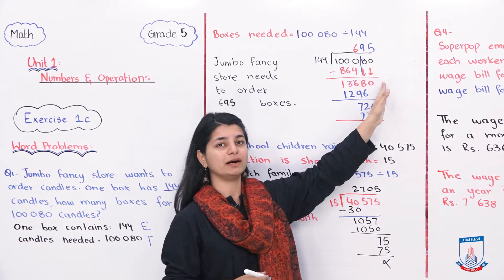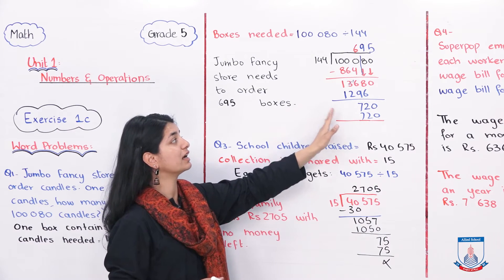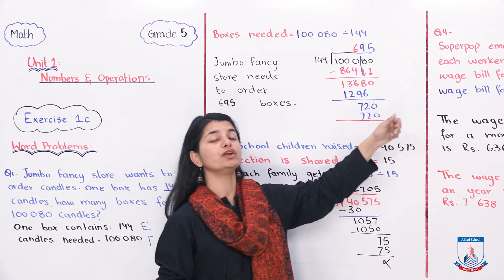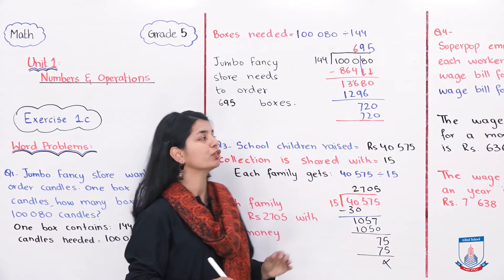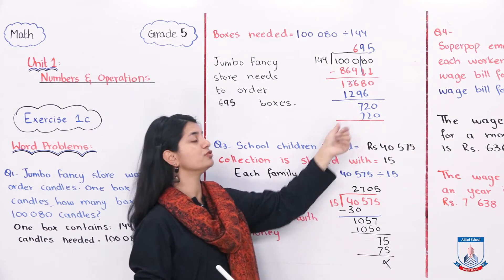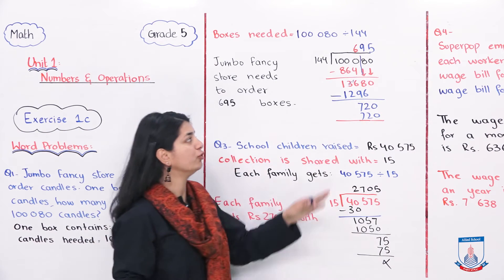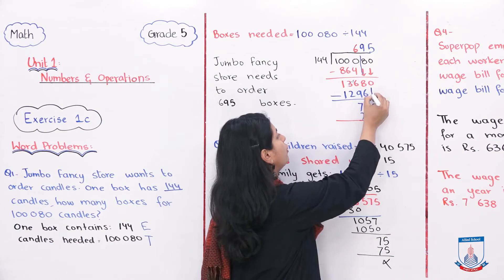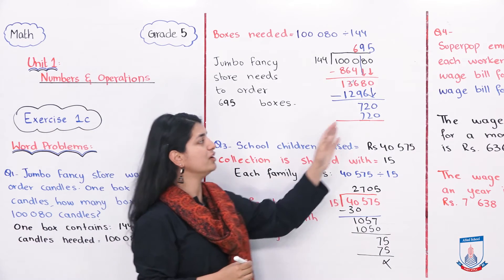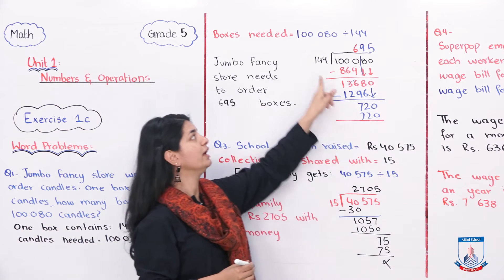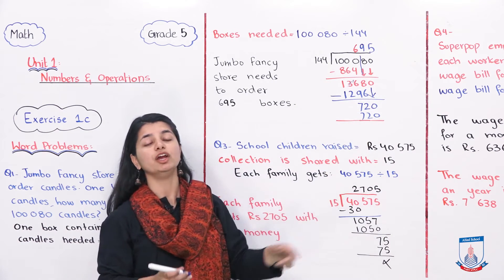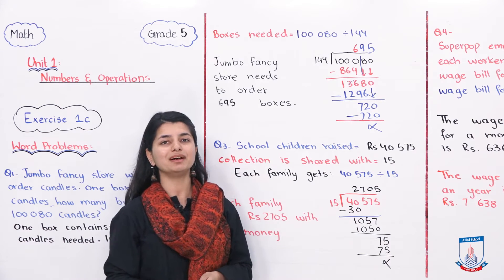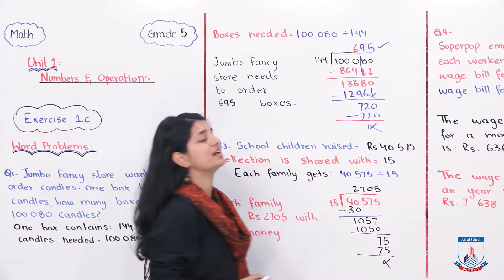The remainder 136 is carried, and the rest of the digits are copied down. In the next step, I see that 144 into 9 is 1,296. Since 1,368 is not in the 144 table, I use 1,296 and subtract. 1,368 minus 1,296 leaves 72. Bring down the 0, giving 720. 144 into 5 is 720, so there is no remainder. 720 minus 720 is 0. So the answer is 695.